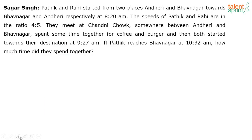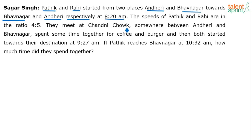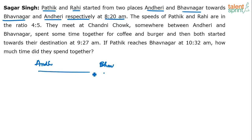That's an interesting one. Let us see how we solve this. There are two guys, P and R, who have started from two places, Andheri and Bhavanagar, going towards Bhavanagar and Andheri respectively. So basically these two guys are moving in opposite directions and both started at 8:20am. Let's say this is Andheri and this is Bhavanagar, and this is the path between these two stations.